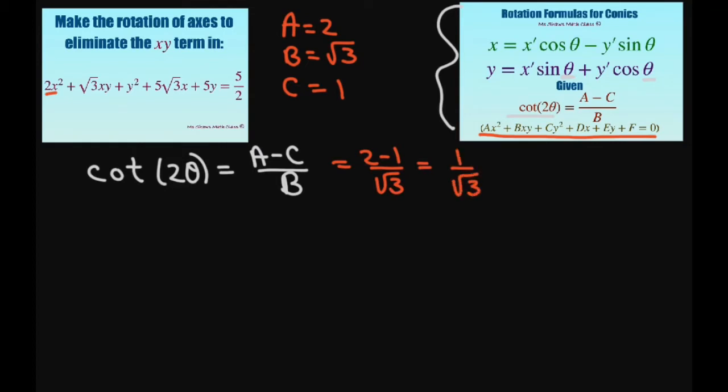To make this simpler, it's easier to know tan of 2 theta, and all I have to do is take the reciprocal of that, because cotangent is 1 divided by tan. So this is going to be square root of 3.